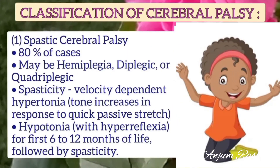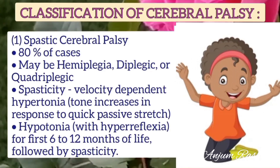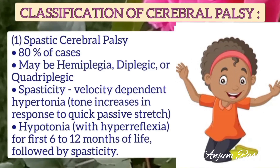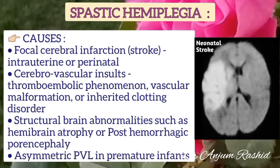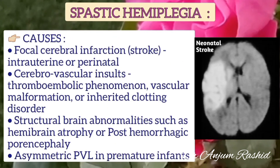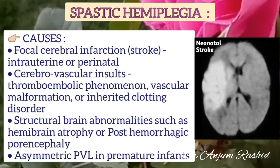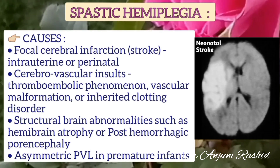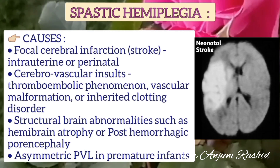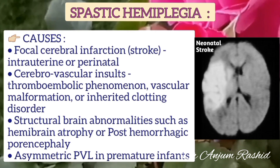Spastic cerebral palsy occurs in 80% of cases, characterized by velocity-dependent hypertonia. There is hypertonia with hyperreflexia for the first 6 to 12 months, followed by spasticity. Spastic hemiplegia may be due to focal cerebral infarction, cerebrovascular accident due to thromboembolic phenomena, vascular malformation, inherited clotting disorders, structural brain abnormalities such as hemibrain atrophy or post-hemorrhagic porencephaly, or asymmetric periventricular leukomalacia in premature infants.